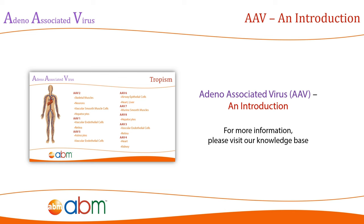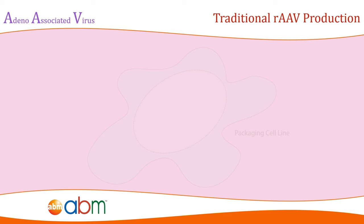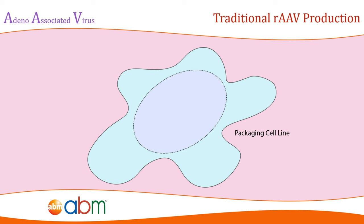The techniques and methods required to produce recombinant AAV will be outlined in this section, as well as all possible modifications that can be performed on the recombinant AAV. The development of the recombinant AAV viral vector was first described in 1984 using a human packaging cell line and a 2-plasmid transfection system.